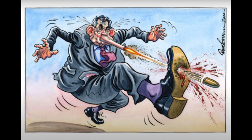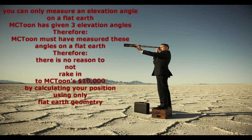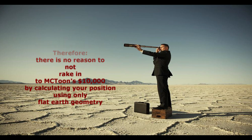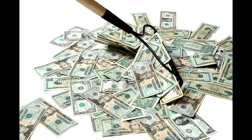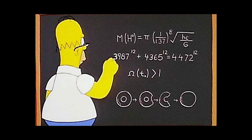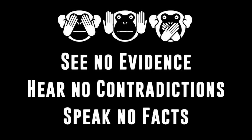It's always nice to see a flat earther shoot himself in the foot. There are four possible ways MC Toon could have gotten hold of his elevation angles. Three of them are not related to the shape of the Earth, and one of them is, in the eyes of Nathan Oakley, only possible if MC Toon stood on a flat Earth. So raking in an easy $10,000 should be a piece of cake for him or any other flat earther who is an expert in flat Earth geometry. They always come up with all kinds of excuses, always diverting the discussion to what the Earth is not instead of what the Earth is, and most of the time their excuses are incoherent, inconsistent, and sometimes even contradicting excuses used before on another topic.